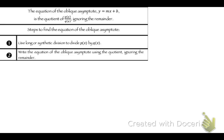To find the oblique or slant asymptote, you have to either use long or synthetic division. Division is not going away — I have told you this before. You need to know how to use long and synthetic division.